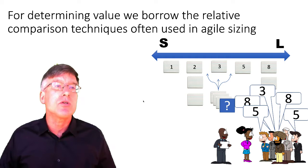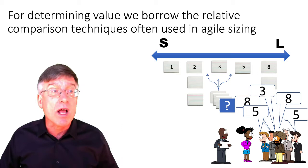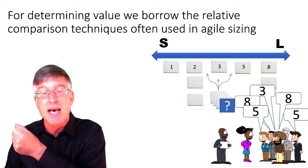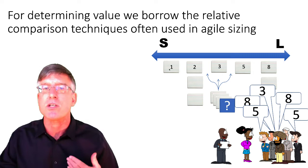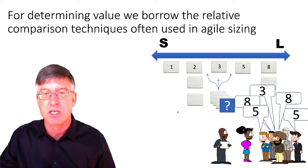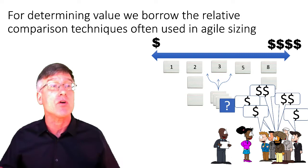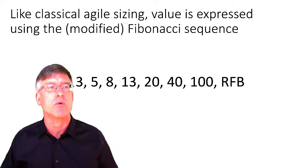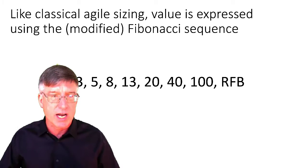That means we can use a technique that's simple and reasonably accurate — borrow the relative comparison techniques that you often use in Agile sizing, where we take a piece of work and compare it to other pieces of work that we have done in the past, and that tells us how big that piece of work is. We can do the exact same thing with value. If we can compare size relatively, why can't we compare value relatively? We can use the Fibonacci sequence, which gives us a very nice progression.